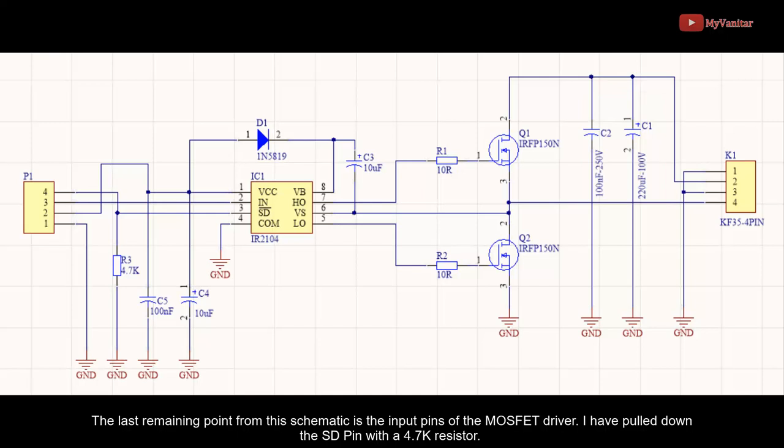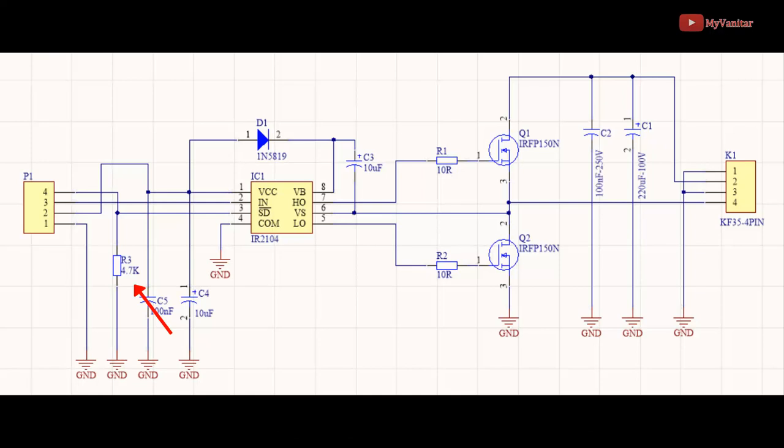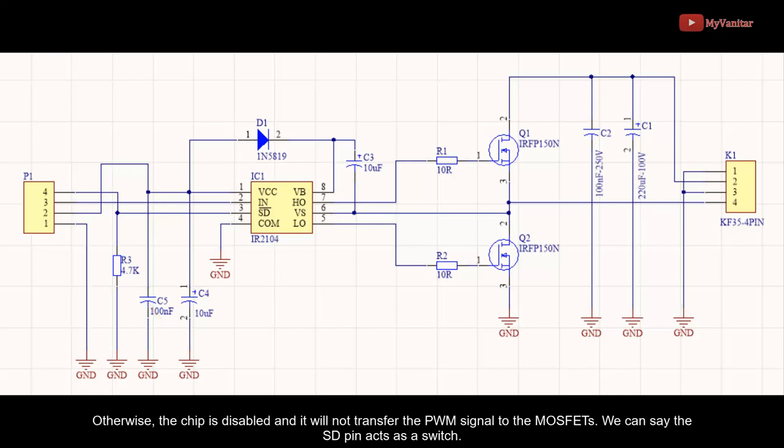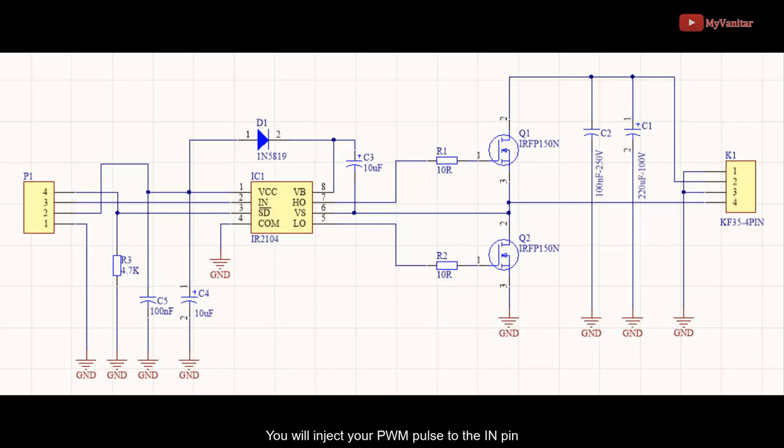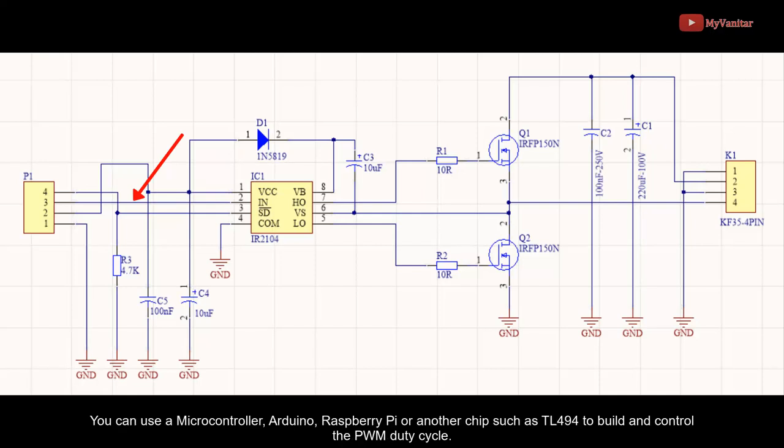The last remaining point from this schematic is the input pins of the MOSFET driver. I have pulled down the SD pin with a 4.7 kilo-ohm resistor. Therefore, if you apply a steady state logic level voltage to the SD pin, you can enable the chip. Otherwise, the chip is disabled and will not transfer the PWM signal to the MOSFETs. We can say the SD pin acts as a switch. You will inject your PWM pulse to the input pin. You can use a microcontroller, Arduino, Raspberry Pi, or another chip such as TL494 to build and control the PWM duty cycle.